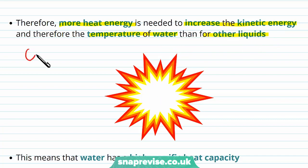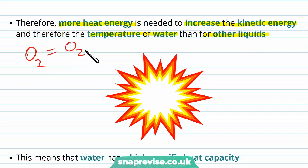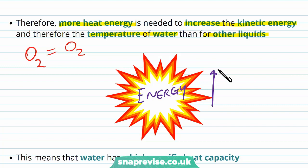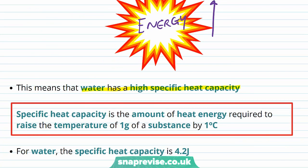Liquid oxygen, for example, has very little energy between each of the molecules, and so it doesn't take much to boil it. But for water, because there are hydrogen bonds, the energy needed as heat is a lot higher in demand. So to boil water, it's going to take a lot more heat. Because of this property, we describe water as having a high specific heat capacity.